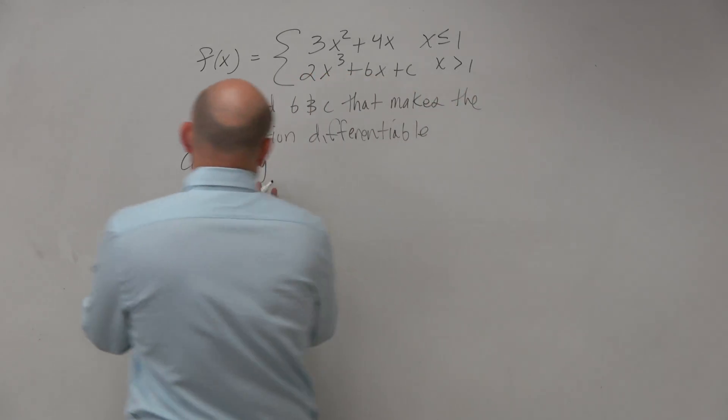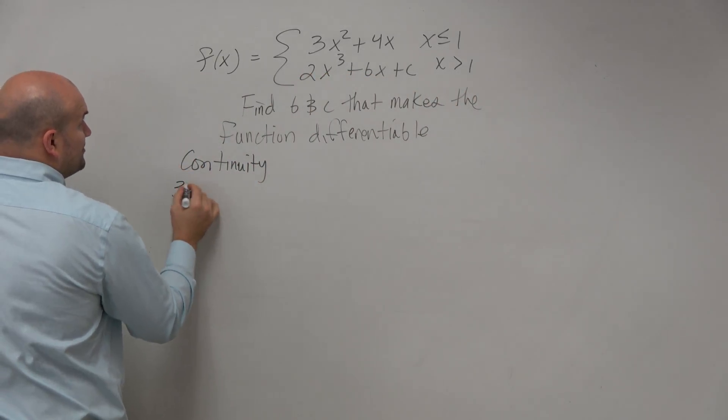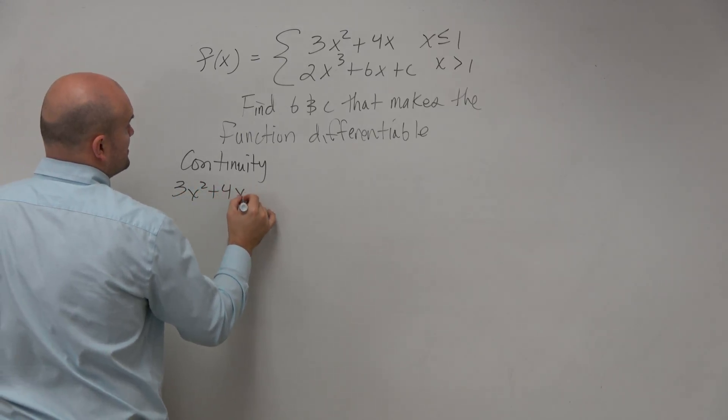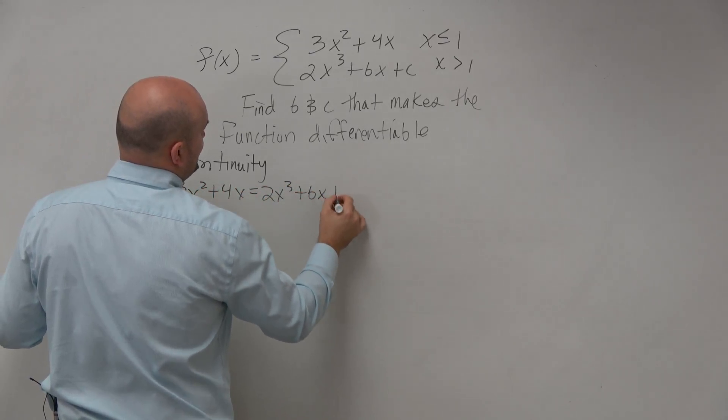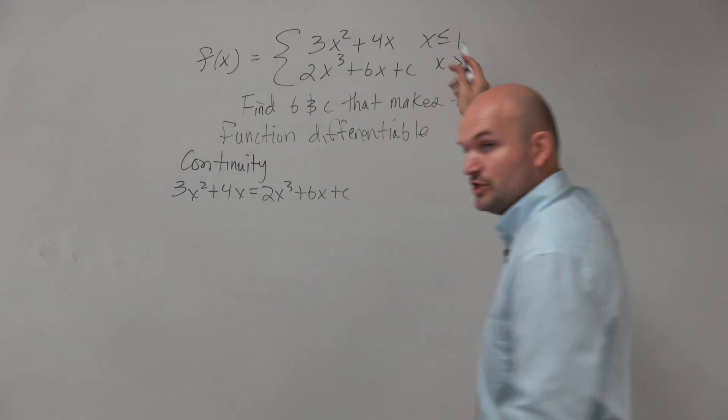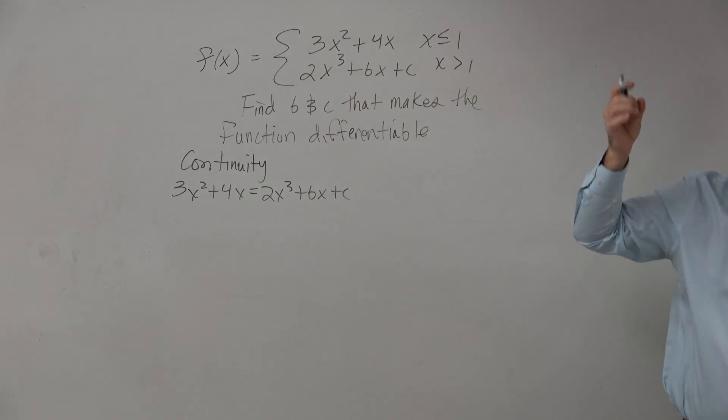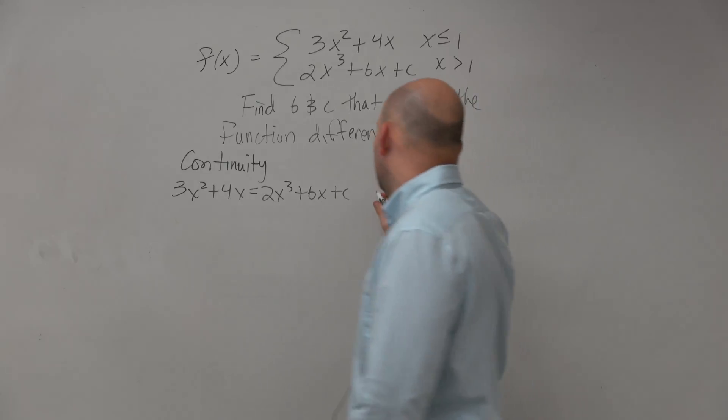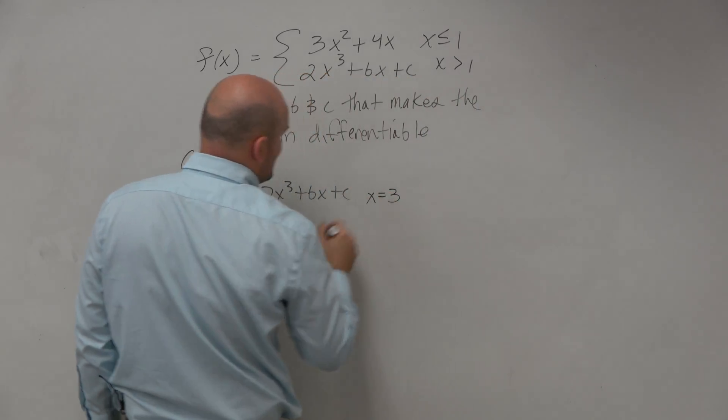We know it has to be differentiable, or I'm sorry, continuous. So therefore, I'll just simply do 3x squared plus 4x has to equal 2x cubed plus bx plus c. Again, first thing, I make sure that I have an equal sign there, so I know it's possible for it to be continuous. And then that has to be continuous at x equals 3.